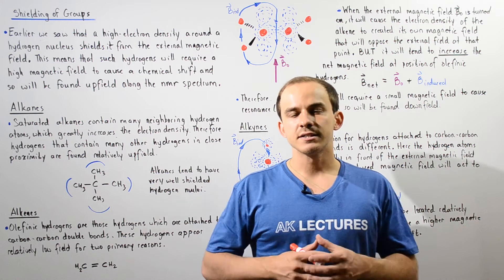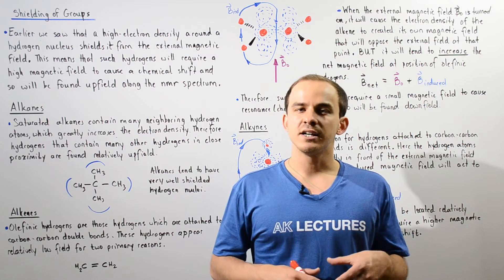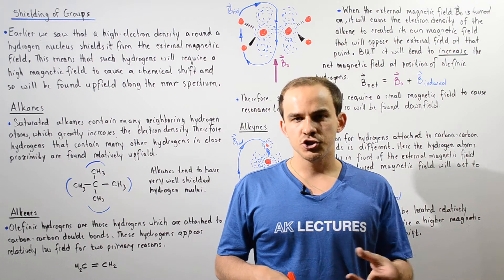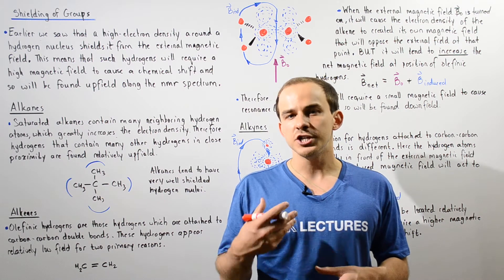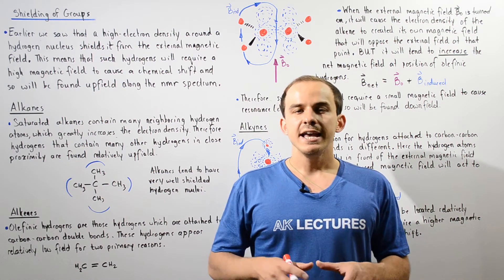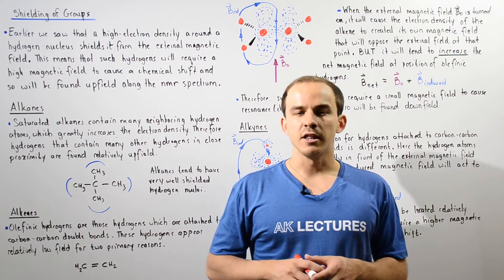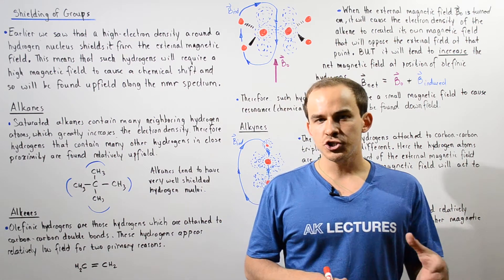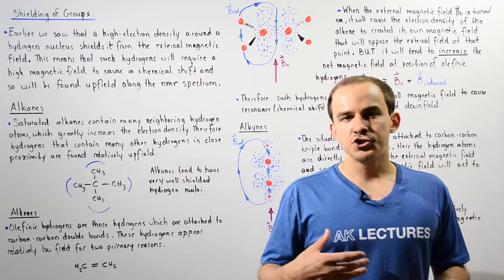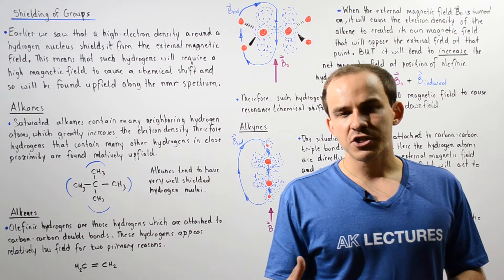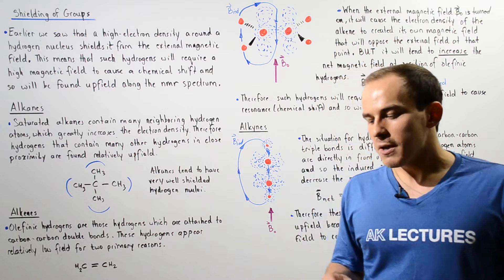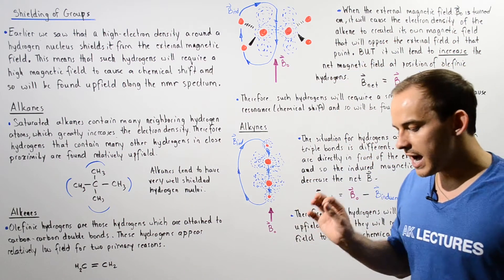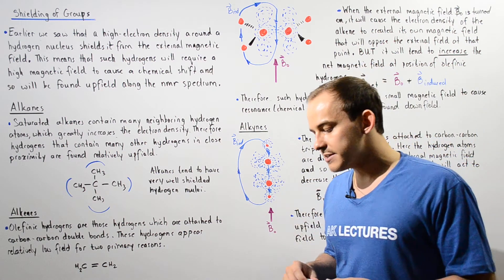In the previous lecture, we discussed chemical shifts and shielding. We examined the chemical shift and the shielding effect that results because of a high electron density.